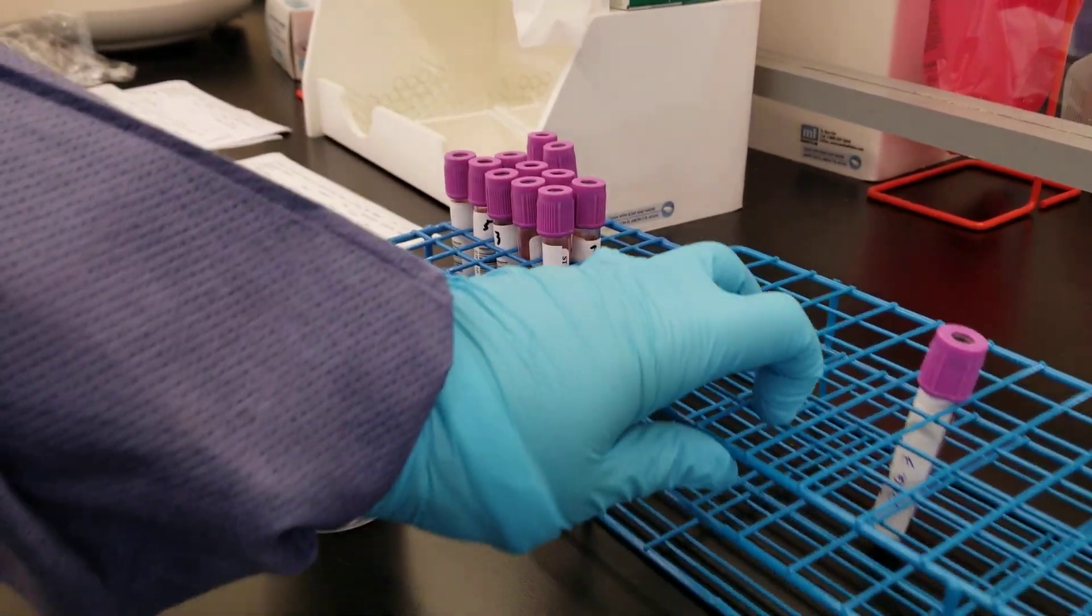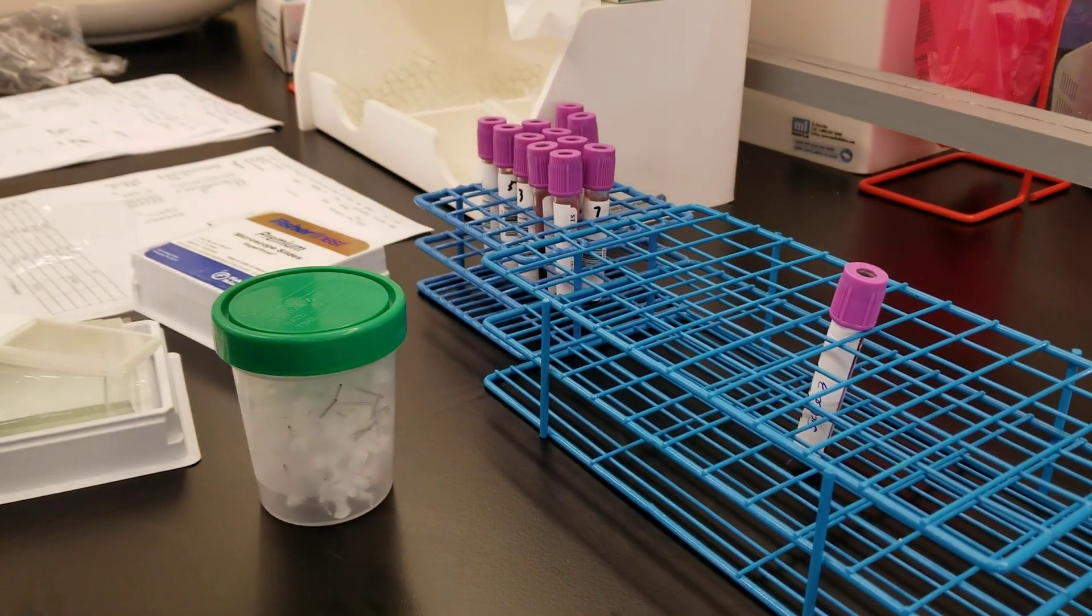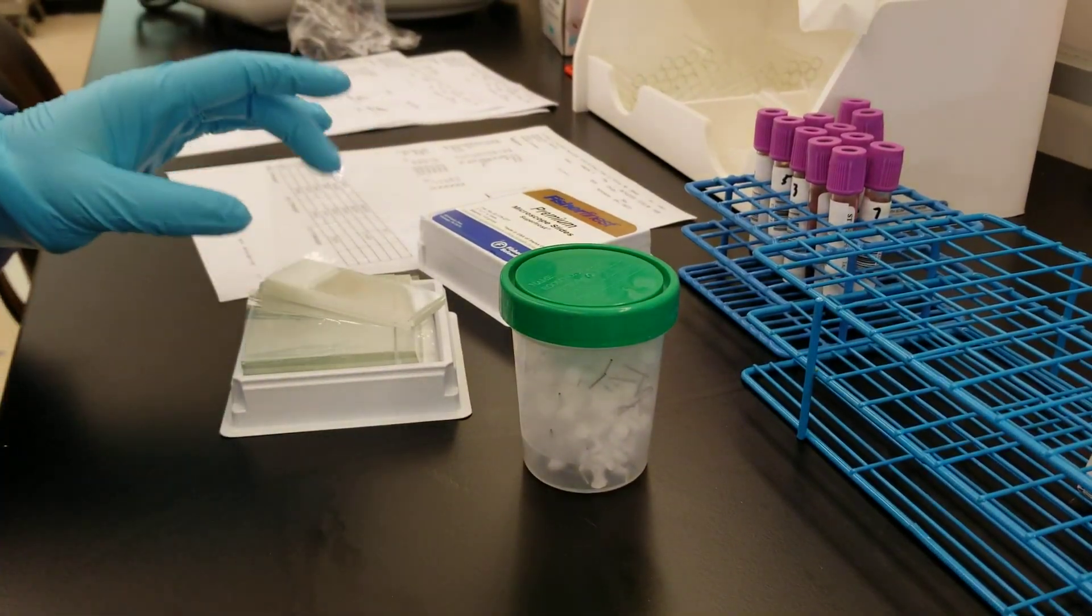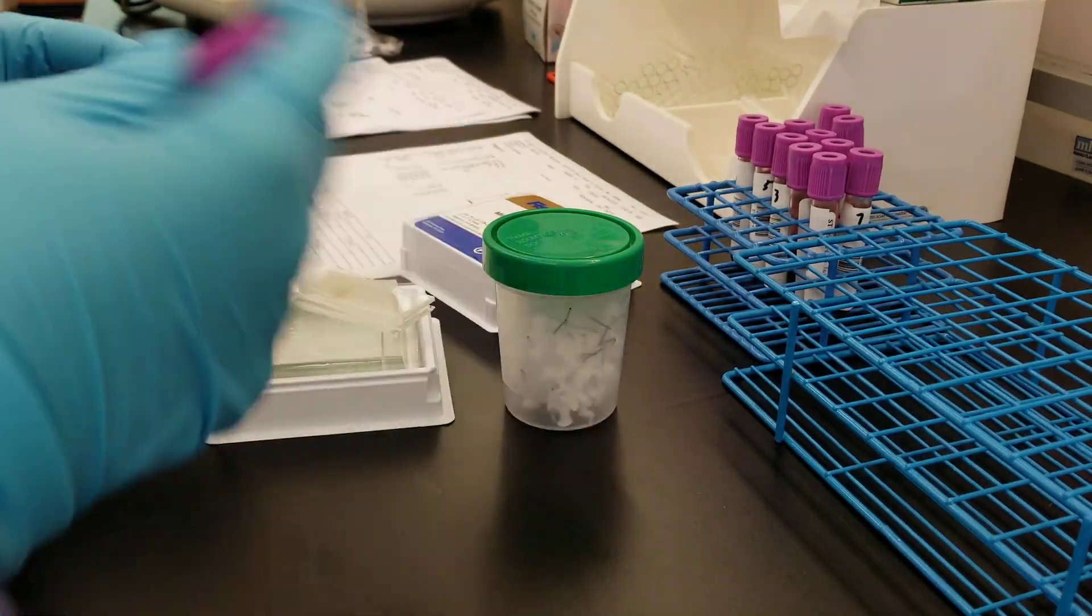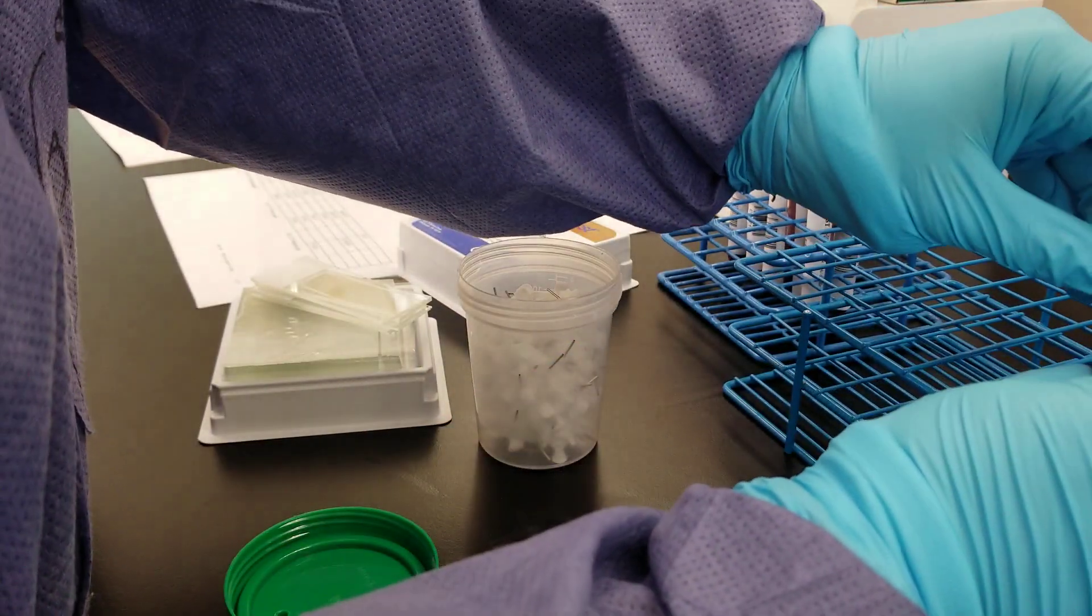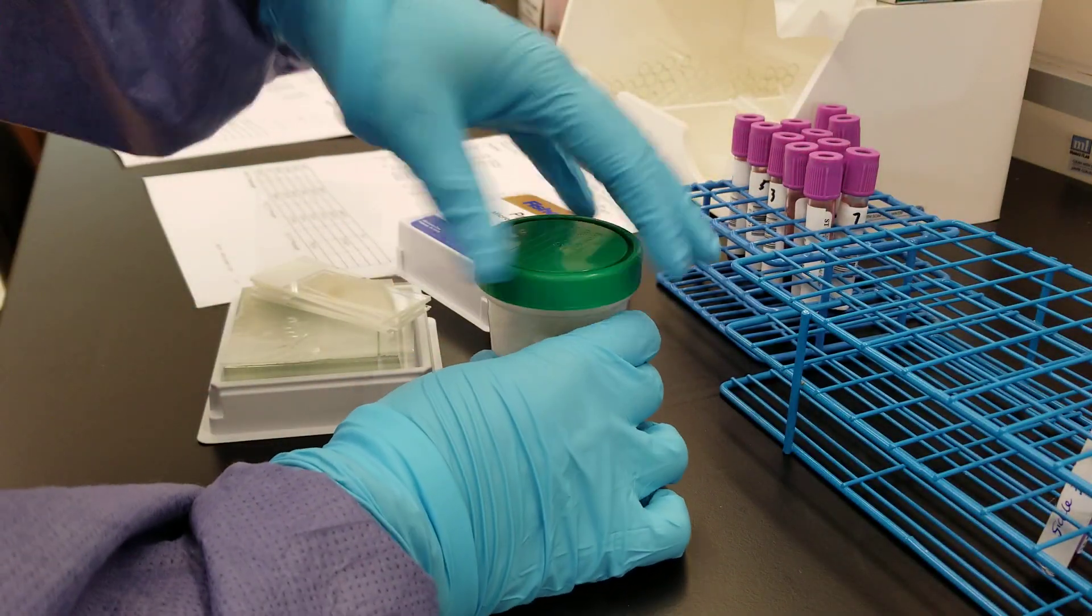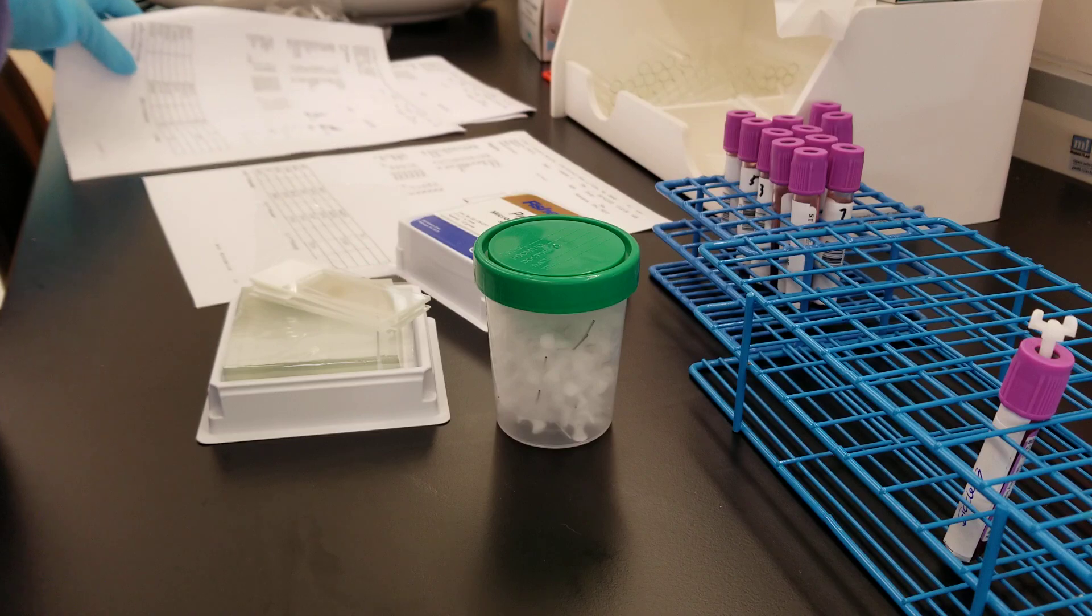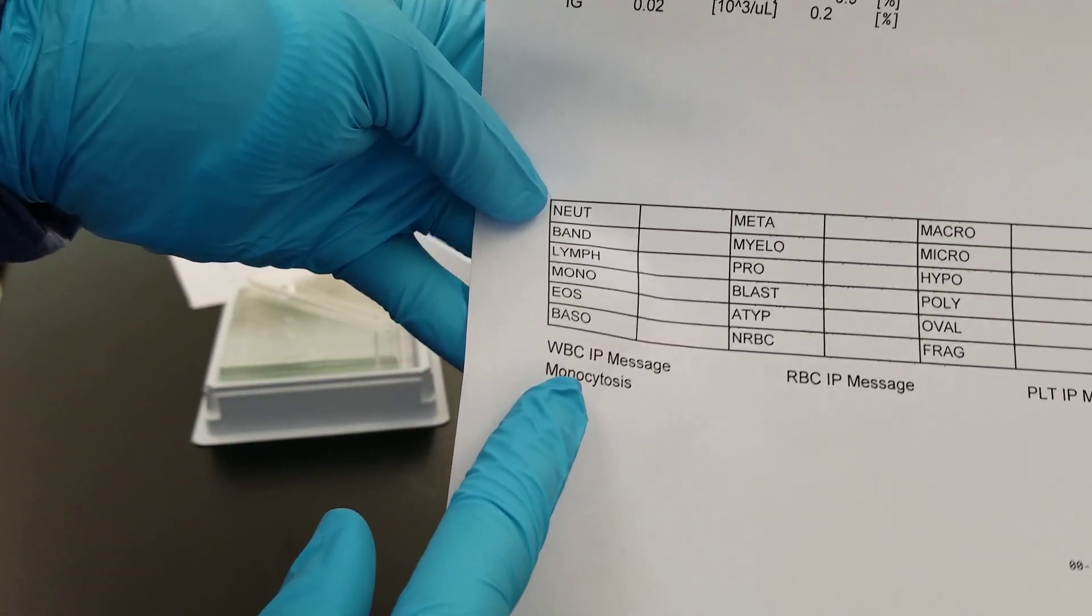Today we're going to be making slides of the positives that we had with our run of specimens on the XN 550. I'm going to show you how I make them. It's different from what you would see in the book and it's a little different from the other video that I showed you. So I'm putting a diff safe in one of our positive sickles. One of our sickles did come up positive here and monocytosis was the flag.